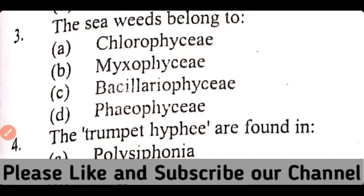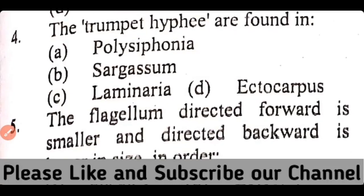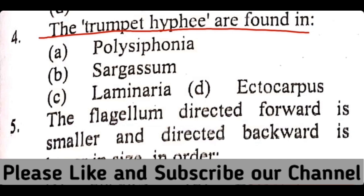Question number 4. The trumpet hyphae are found in: Polysiphonia, Sargassum, Laminaria, or Ectocarpus. The correct answer is option C. Laminaria contain trumpet hyphae.